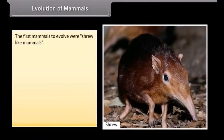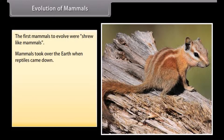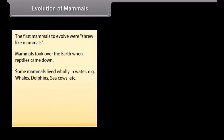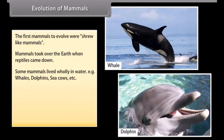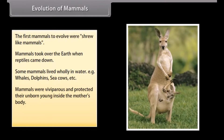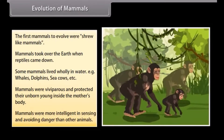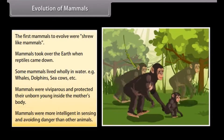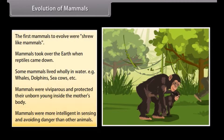The first mammals to evolve were shrew-like mammals. Mammals took over the earth when reptiles declined. Some mammals lived wholly in water — for example, whales, dolphins, sea cows, etc. Mammals were viviparous and protected their unborn young inside the mother's body. Mammals were more intelligent in sensing and avoiding danger than other animals.